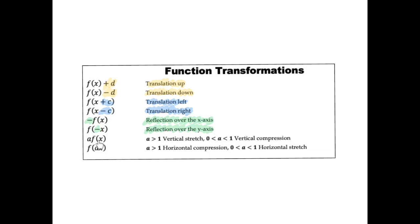Here I have a number multiplying my whole function, and then a number multiplying only my x. I have to pay attention to what kind of number it is. If the number multiplying the whole function is greater than one — like 10, 5, 7 — you will get a vertical stretch, meaning you're going to pull your function up and down. But if the number is between zero and one, like 0.5 or one quarter, you will get a vertical compression — pushing up and down towards the center.